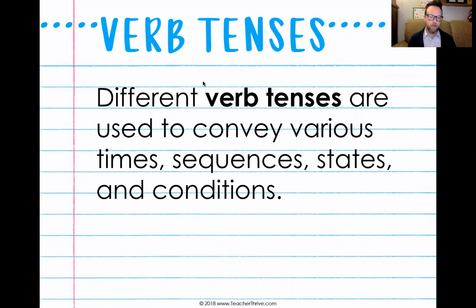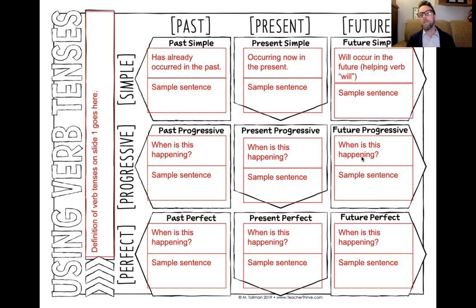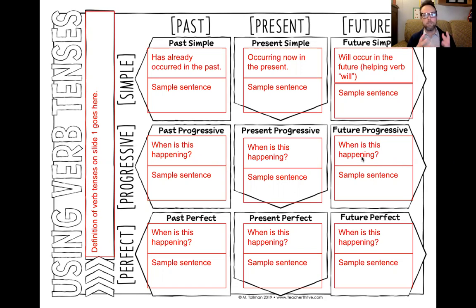In the previous video, we looked at simple tense — simple past, simple present, and simple future. Our sketchnotes at this point should look something like this: simple past means that something has already occurred in the past. A simple sentence would be, 'Ty visited Kay yesterday.' I left the simple sentences blank because there were a few different examples within the video, or you could come up with your own.